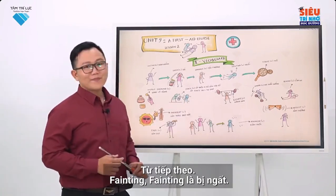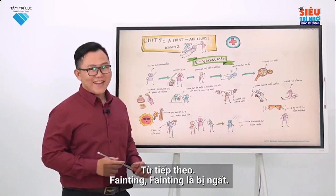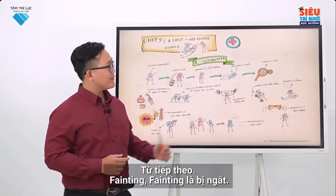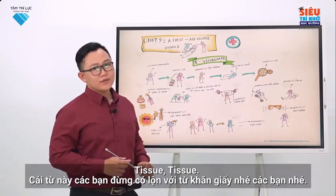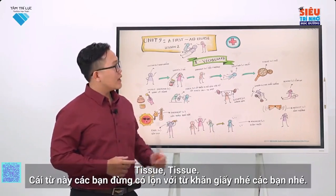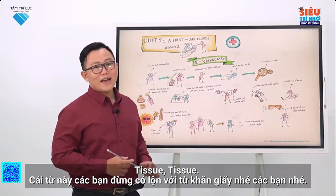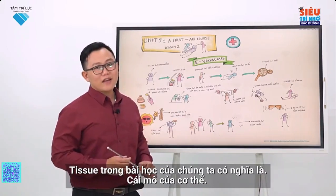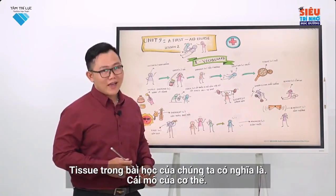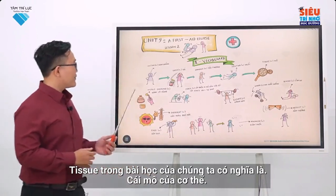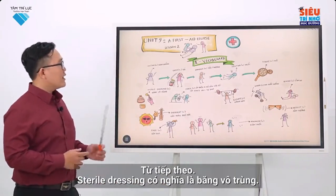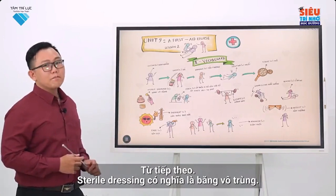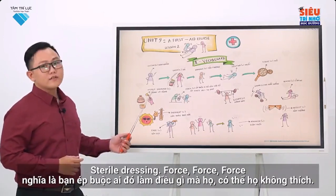Next word: fainting. Next: tissue. Please don't mistake this word with tissue meaning a piece of soft paper. The tissue in our lesson refers to the cell that forms part of humans. Next word: sterile dressing.